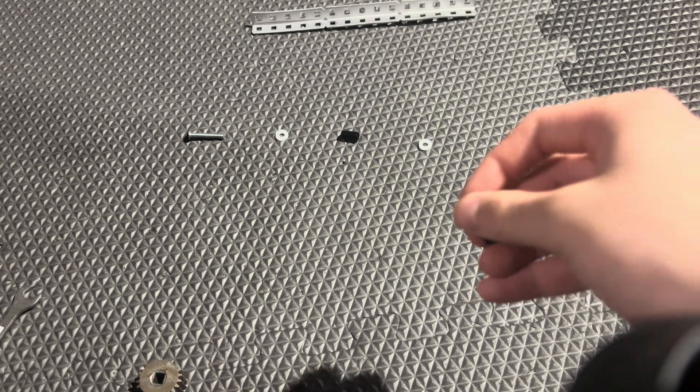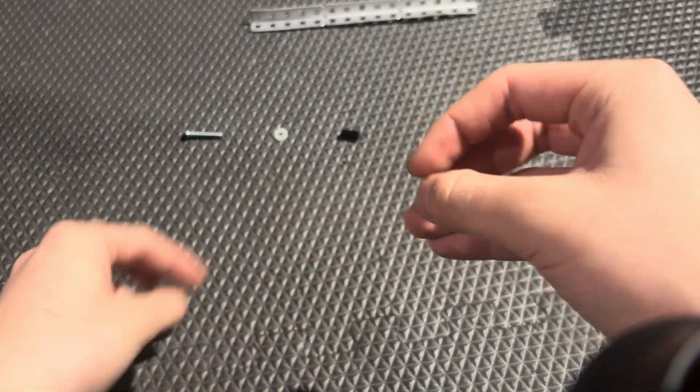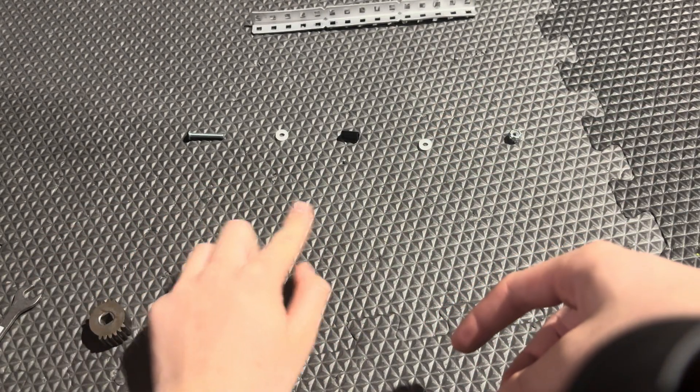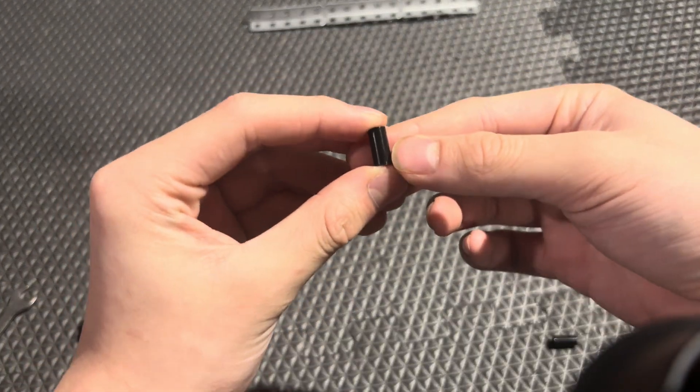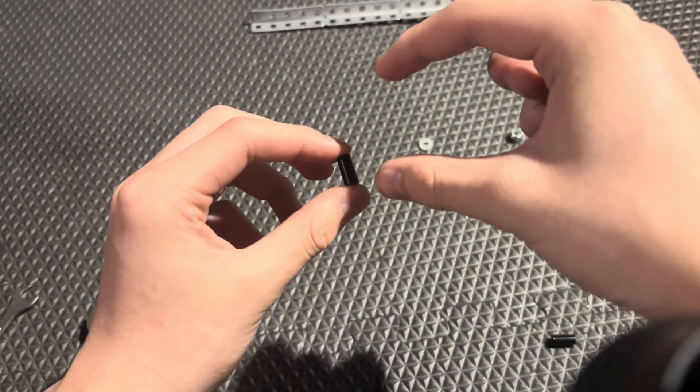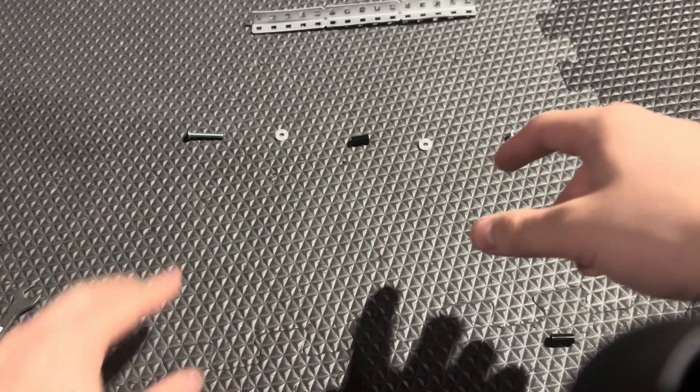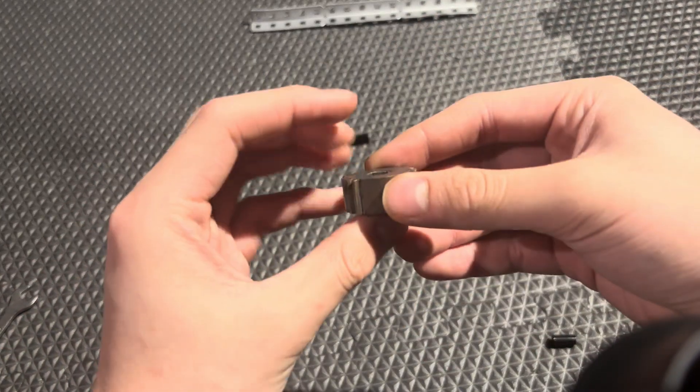To start off, we need, obviously, a screw, washer, a spacer. I don't have the right one, actually. This is a 0.5-inch, but you generally want one that's 1-inch, or just longer than whatever you're trying to screw joint.